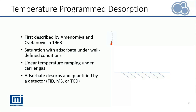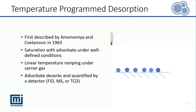Here is a simple animation that describes these experimental steps. First, the basic probe molecules are introduced to the sample and they bind to the acid sites. The excess basic probe is purged out with a carrier gas. The temperature program desorption then starts with a linear ramping of temperature. As the temperature increases, the adsorbate molecules bound to the weak acid sites desorb first, followed by the molecules bound to the strong sites.